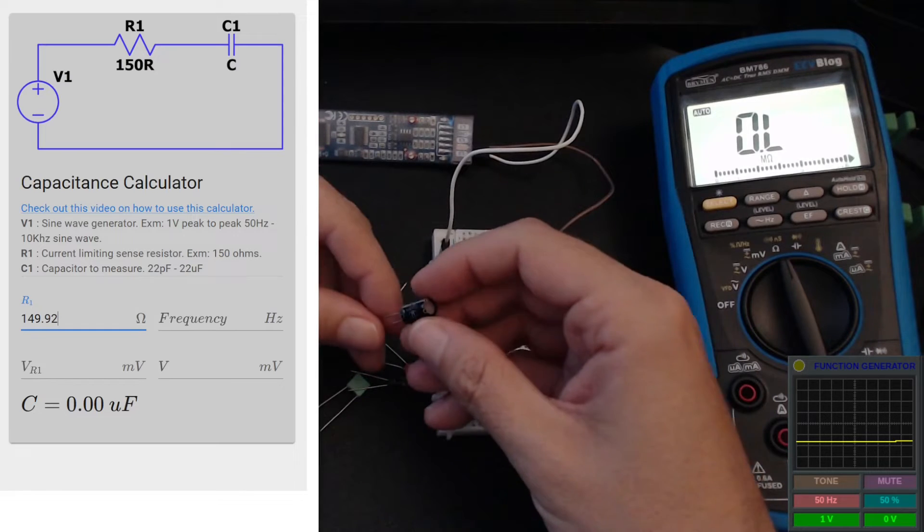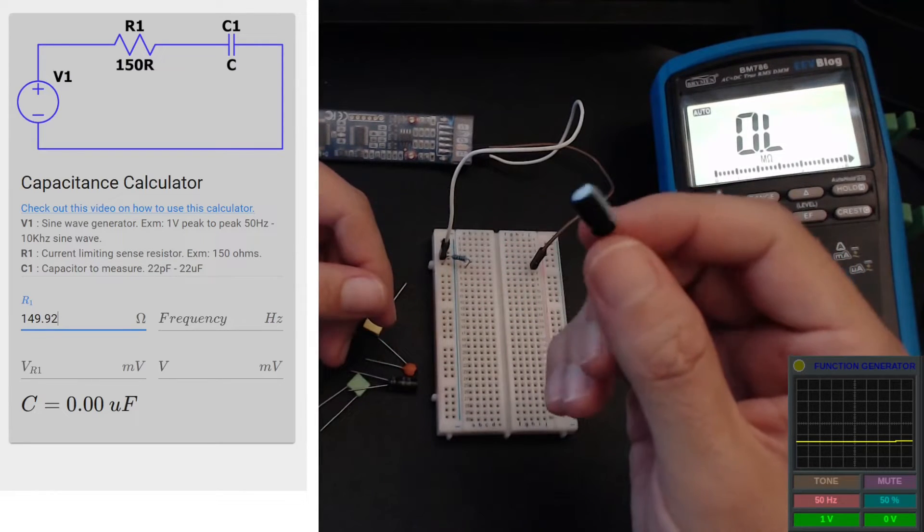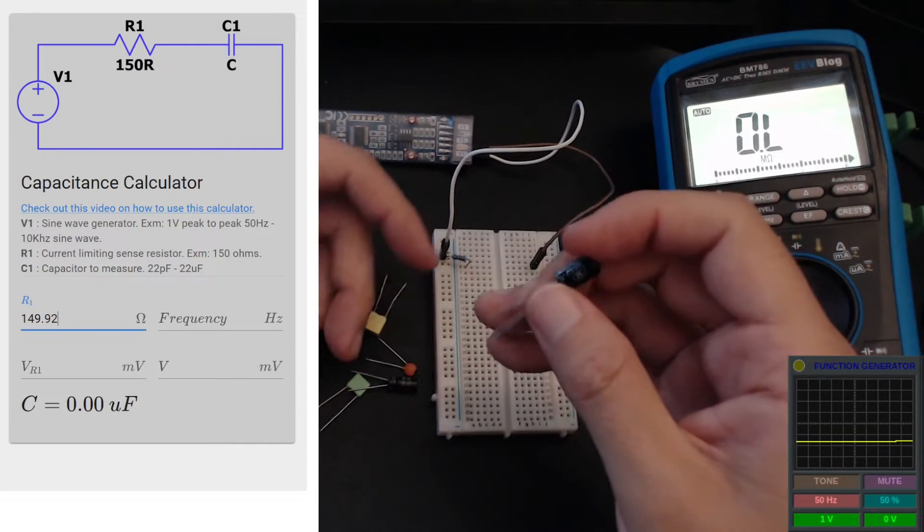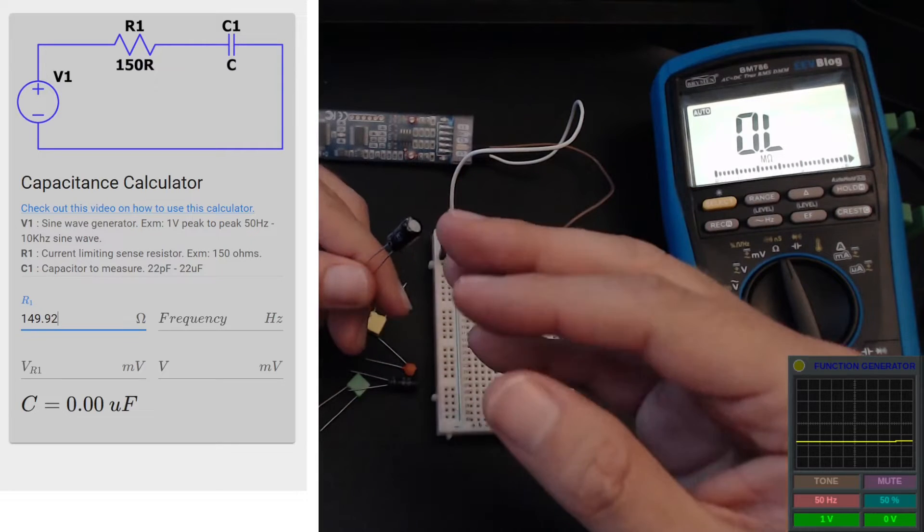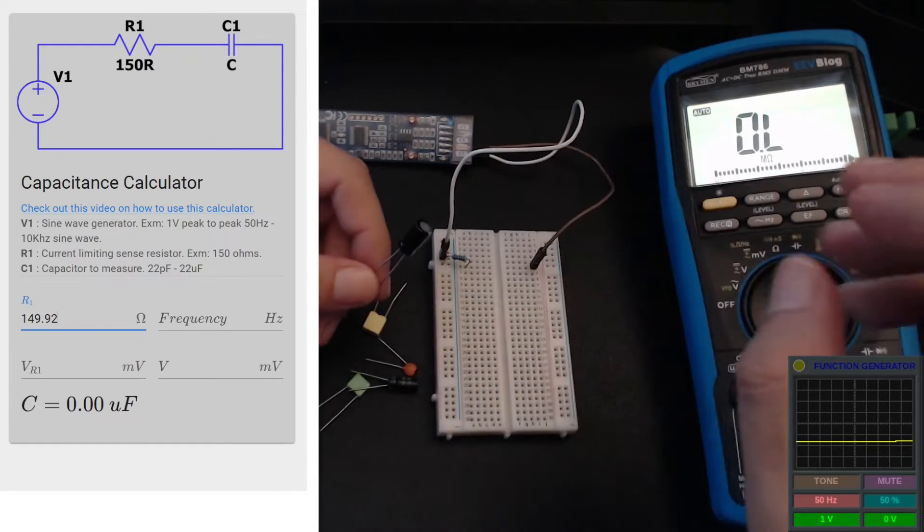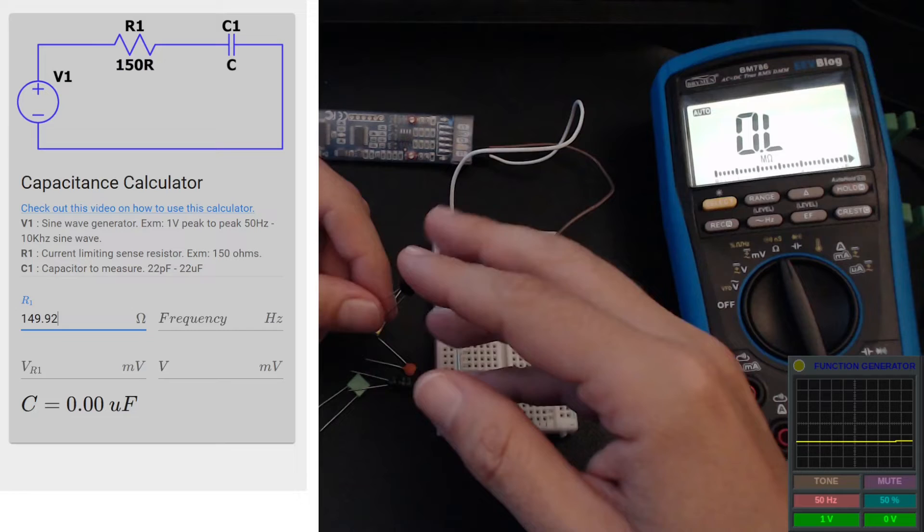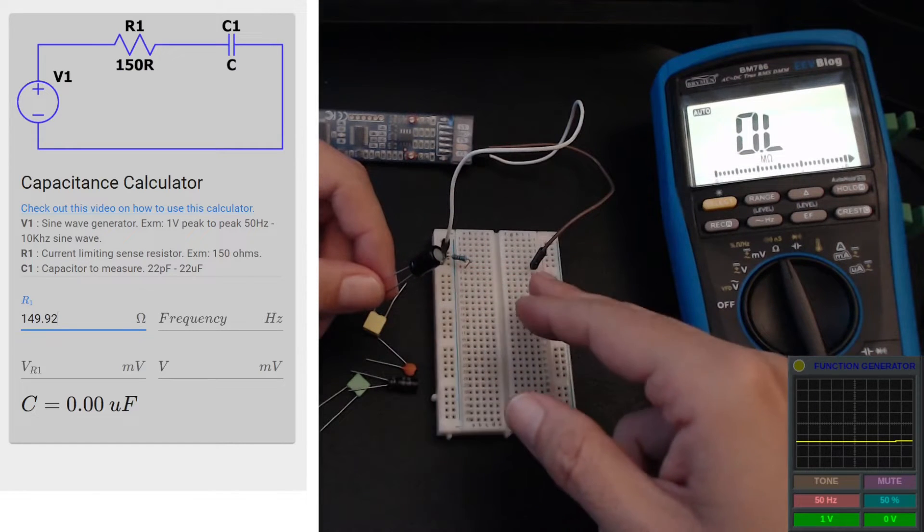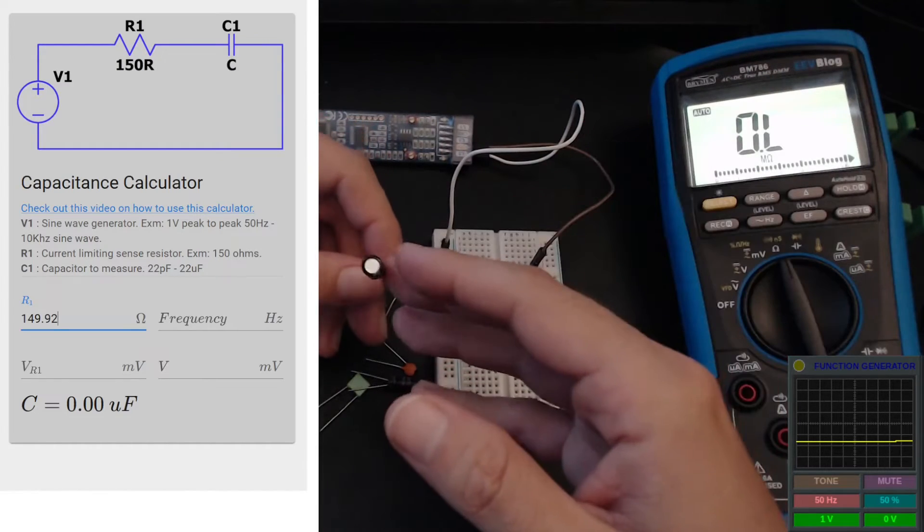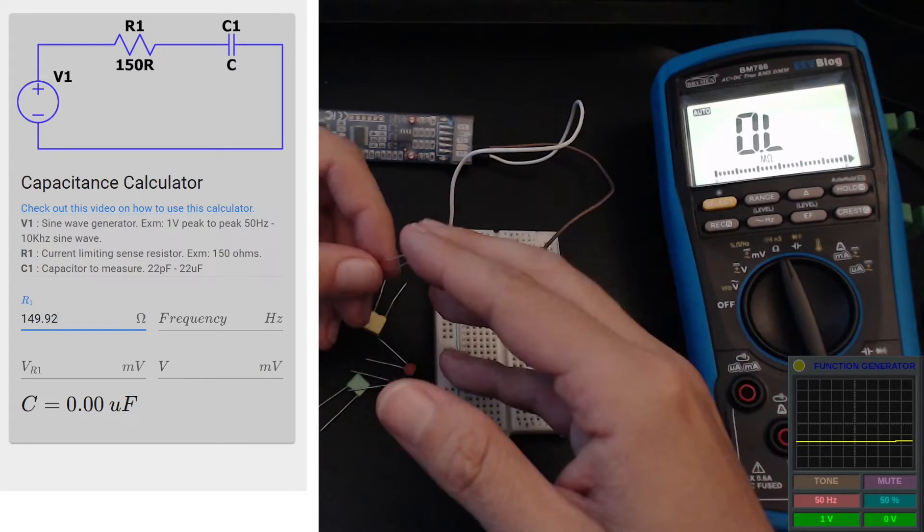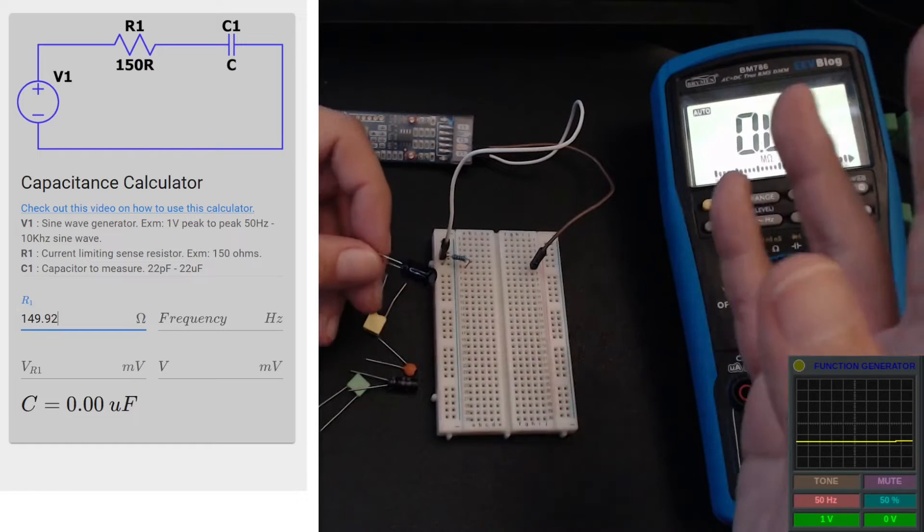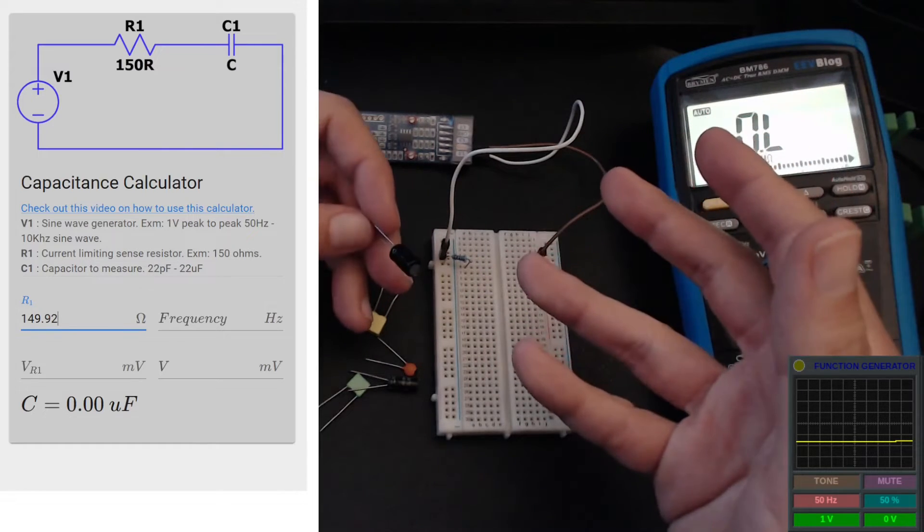Now we can start measurements. I want to start with a relatively large capacitor which is 22 microfarads. This is quite the upper boundary of using this method because if you want to measure larger capacitors than 22 microfarads, you'll need to use signals in lower frequencies, lower than 50 hertz. Once we do that, we'll be measuring some voltages across our circuit and those voltages will be all over the place depending on the frequency of your signal, and it won't be as accurate.